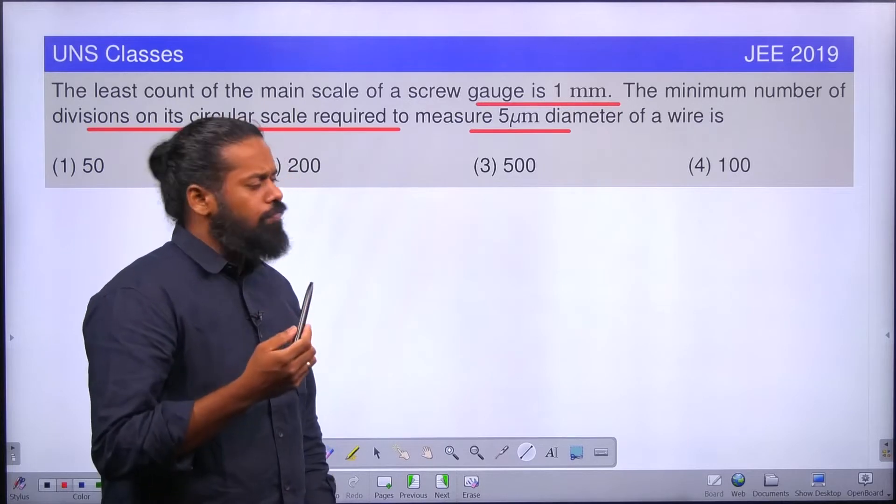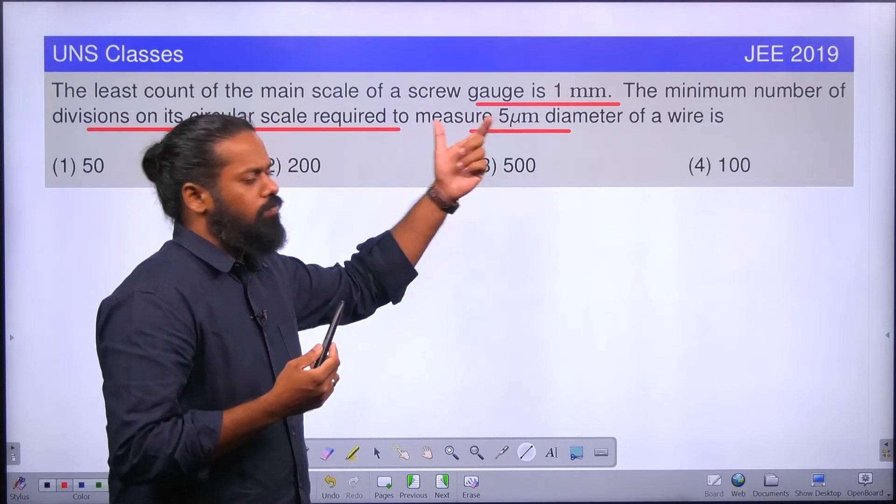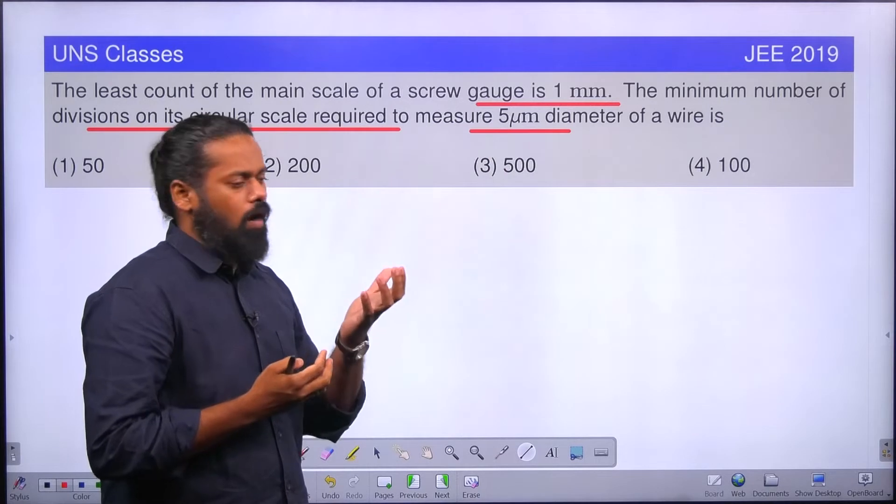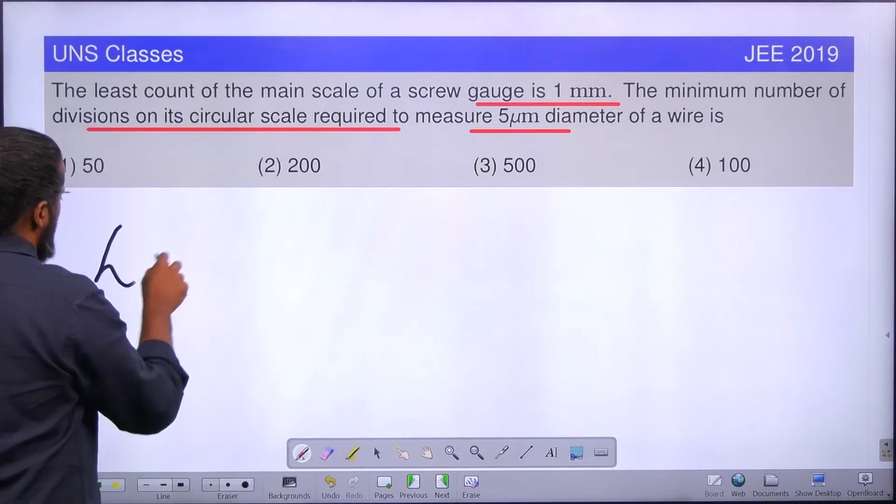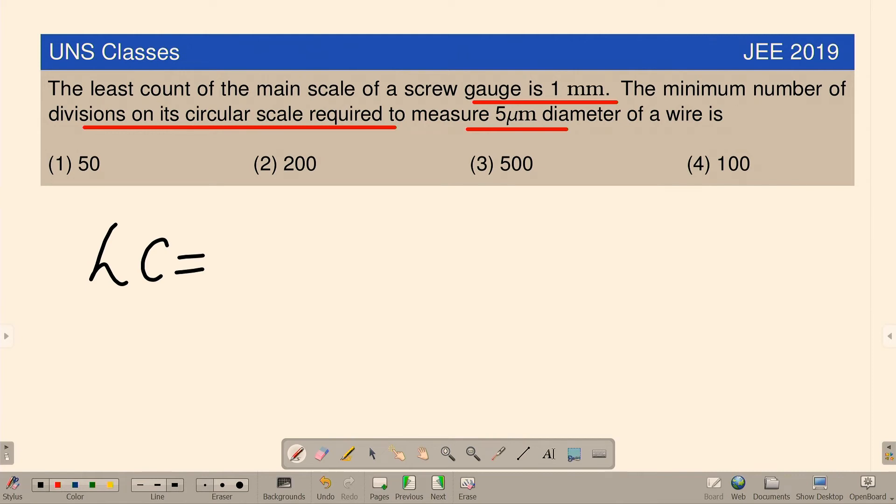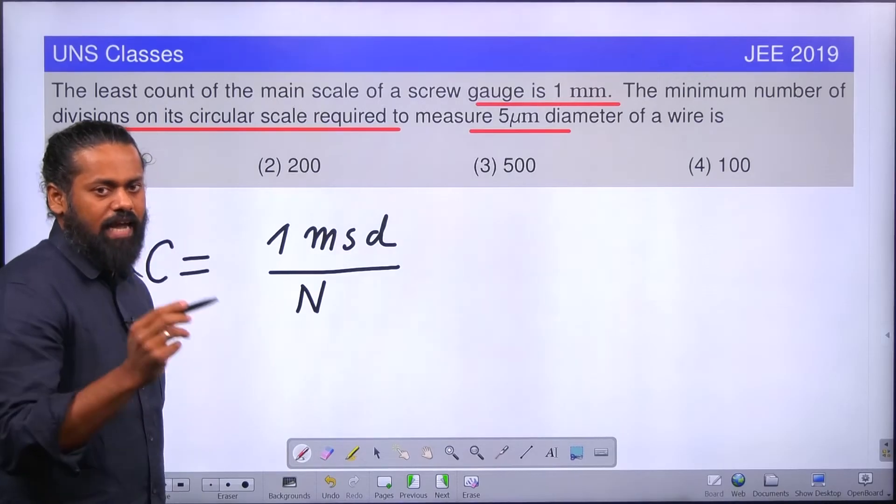If you want to measure 5 micrometer, we need that much least count. That is a very important idea. What is least count? Least count for a screw gauge is actually 1 main scale division divided by the number of divisions on head scale.